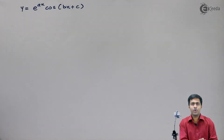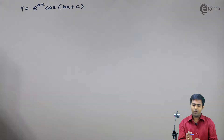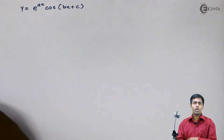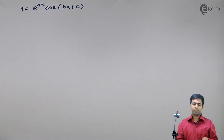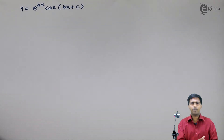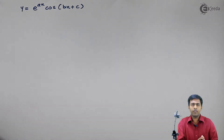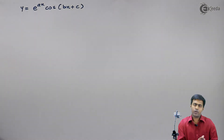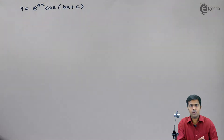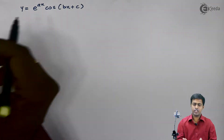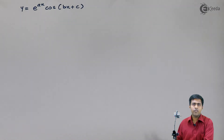Hi guys, in this video we are going to find out the nth derivative of y equal to e raised to ax cos of bx plus c. To find out the nth derivative, we will proceed to find out y1, the first derivative. From y1 we will find y2, from y2 we will find y3, and from the values of y1, y2, and y3 we will predict the value of yn — the nth derivative. Let's start with the first derivative.